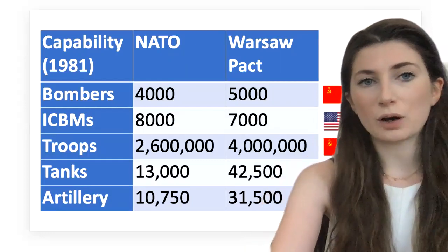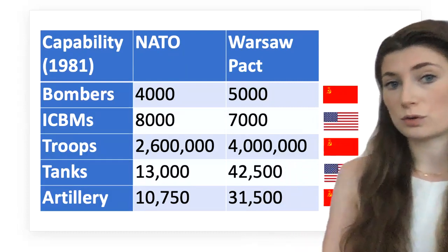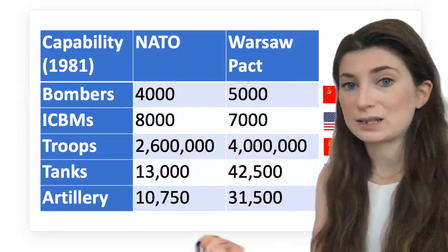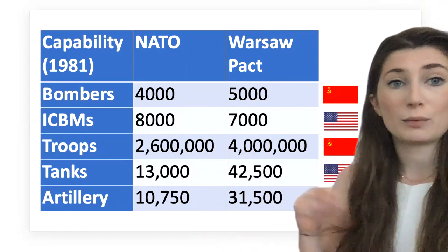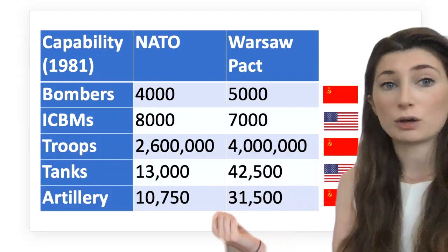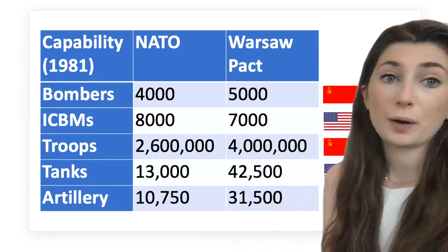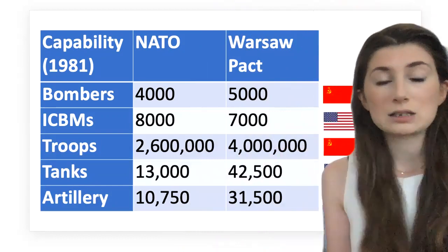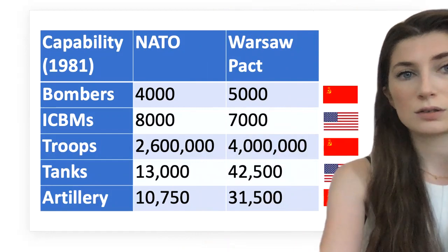Here are some comparative figures from 1981 for NATO versus the Warsaw Pact, covering bombers, ICBMs — intercontinental ballistic missiles — troops, tanks, and artillery. The sides are quite closely matched in most areas, though the USSR holds some superior power in certain respects. Consider the purpose of the Warsaw Pact for the USSR — using it as a way to take control of other nations' armies for the sake of what they termed a 'defensive alliance.' The numbers show how evenly matched both sides were.